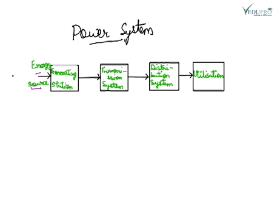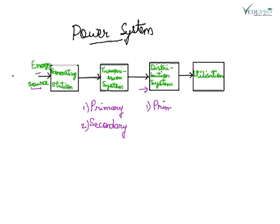Then the transmission system is there. The transmission system can be of primary transmission or secondary transmission — these are the two types. Then comes the distribution system, which is also of two types: primary distribution and secondary distribution. The last block is the user, which represents the utilization of the generated power.